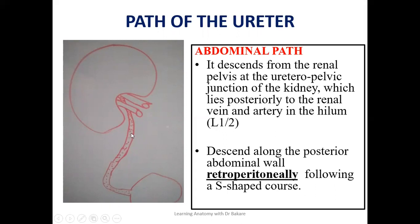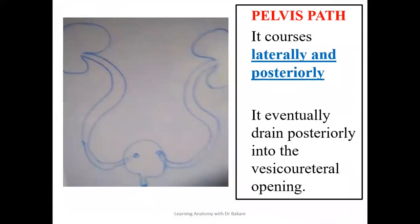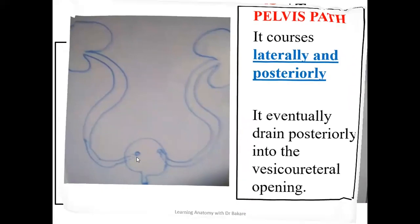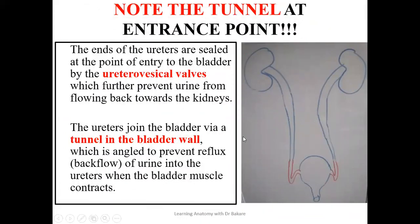The ureter is a retroperitoneal organ, which means the peritoneum runs just on a particular surface of it. In the pelvis, the ureters run along the lateral walls and give an S-shaped configuration, moving down to the back. The link they form with the urinary bladder is at the posterior part of the urinary bladder. They enter into it at the vesicoureteric opening at the back. There is a specific tunnel or curvature that is formed just before the ureter enters into the urinary bladder.